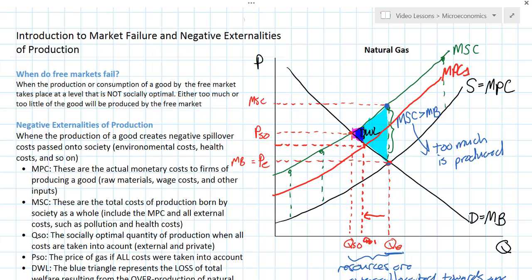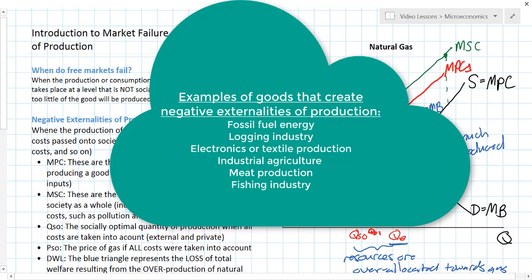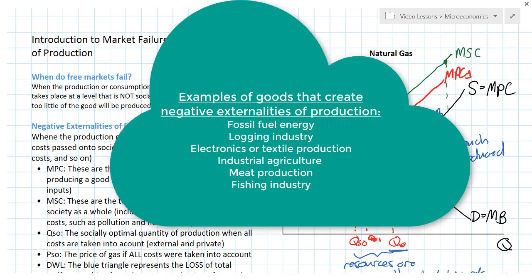In our next lesson we'll talk about ways that governments, policy makers, and regulators can correct the negative externality of production arising from gas or any other good that creates spillover costs in society. What types of goods might create negative externalities of production? You can think of any good that results in pollution — air pollution, water pollution, soil pollution, erosion, deforestation, any negative effect on the environment. Effects on human health could also be considered negative externalities of production.